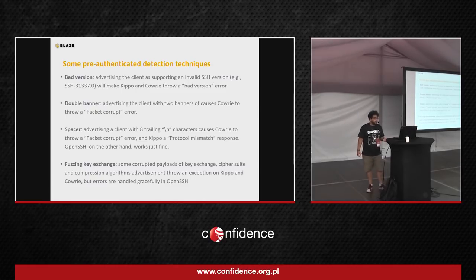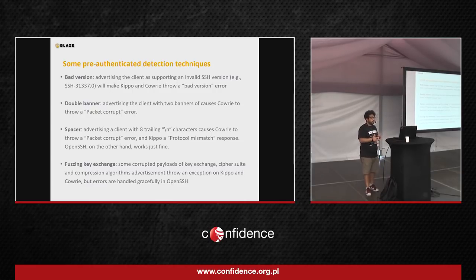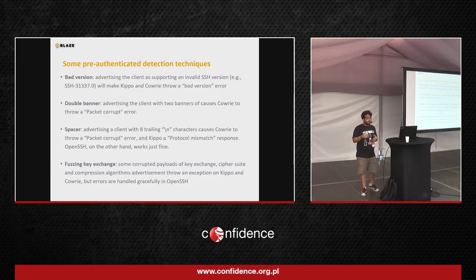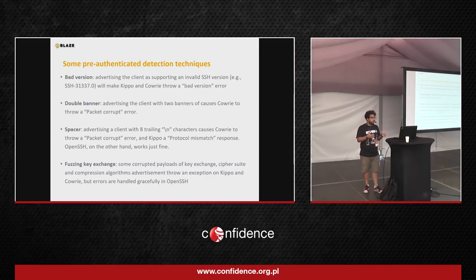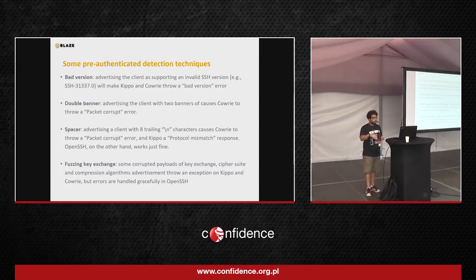And there's the fuzzy key exchange technique. In this initial key exchange with advertisement of cipher suites and compression algorithms, if you fuzz the key exchange method against OpenSSH, it will not break. Whereas against Cowrie and Kippo — which under the hood use Twisted Matrix, Python Twisted, for their SSH servers — it throws thousands of different exceptions. So you can tell: when you try these fuzzy key exchanges against OpenSSH, it gives a robust error message like 'protocol mismatch.' Whereas the honeypot just crashes big time and nothing comes back.